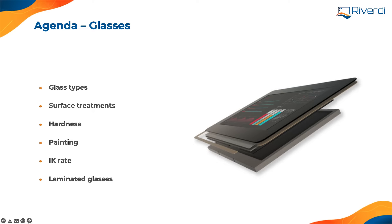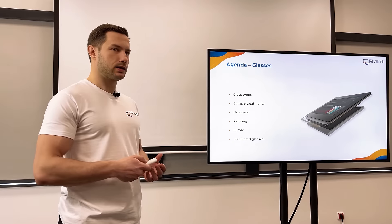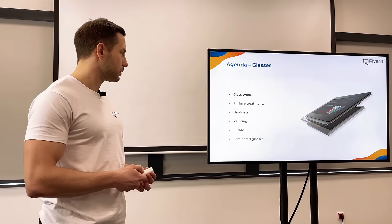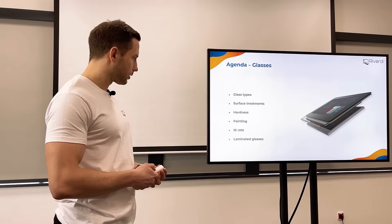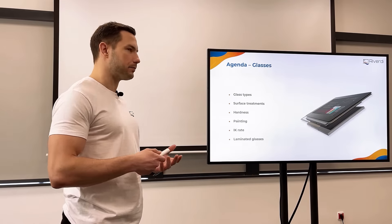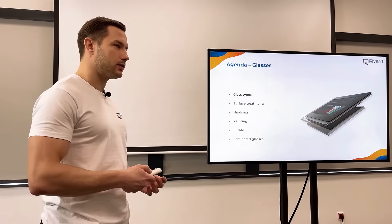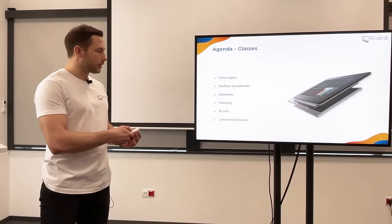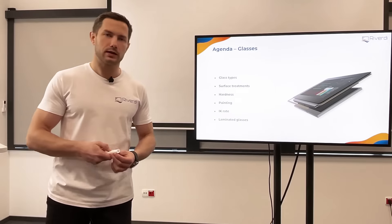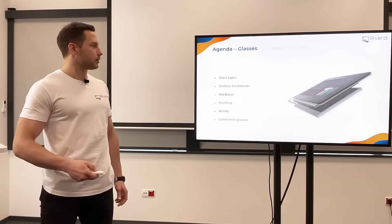Here we have a short agenda for today. We'll talk about different glass types, then the surface treatments — what we do to achieve different parameters on the surface only — then about the hardness, which is quite important when we want to protect something. Then painting the glass, how we do it and what we can achieve. And IK rate, which is about mechanical impact — how much mechanical impact the glass can withstand. And then about laminated glasses, why we laminate the glass and what we can achieve by that.